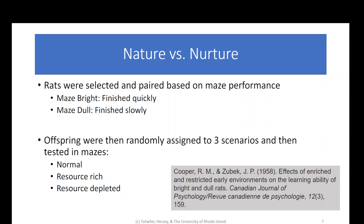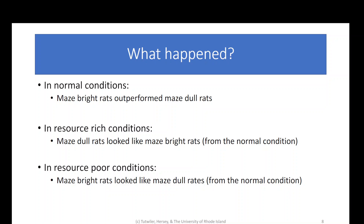The rat babies got assigned to three scenarios and were then tested in mazes. One scenario was normal — just a straight-up maze, nothing weird. The second was resource-rich: there was food and things to help the rat. The third had depleted resources — no food, no water, nothing to help the rat. In the normal conditions, the rats that were bright outperformed the dull rats — so there's genetics at work. In the resource-rich conditions, where they gave them a lot of help, the dull rats performed the same as the bright rats.